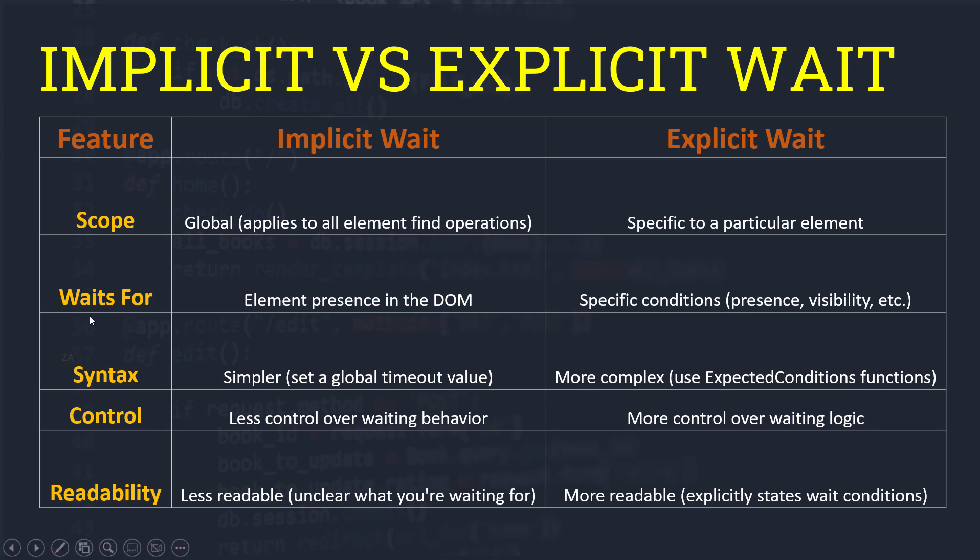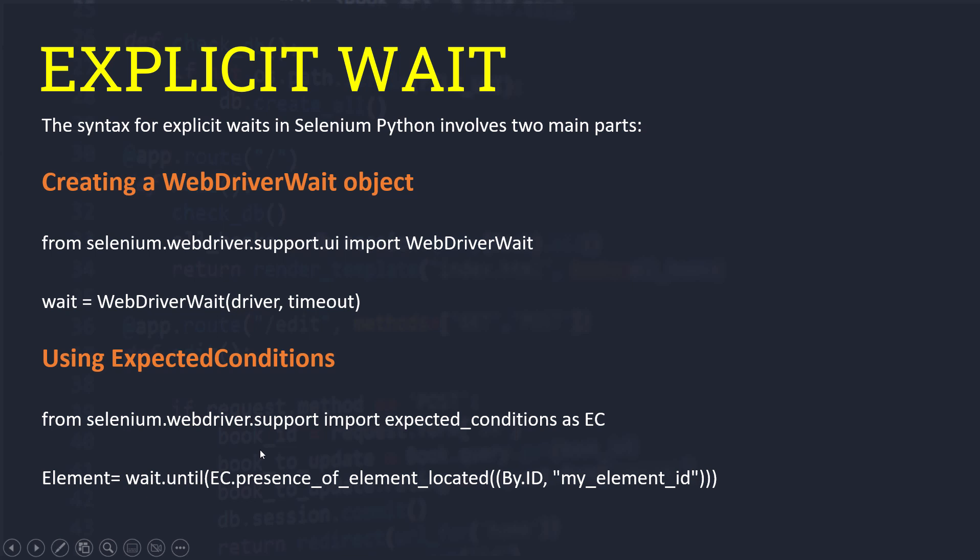The explicit wait is more readable because we define the waiting conditions and know exactly why we are waiting. Now we need to understand the syntax of explicit wait before we implement it practically. First we need to create a WebDriverWait object, importing from selenium.webdriver.support.ui. We pass the driver and timeout to it. Then we need to use expected conditions by importing from selenium.webdriver.support import expected_conditions as ec — ec being just an alias. We then give a condition such as presence of element located by ID or XPath.